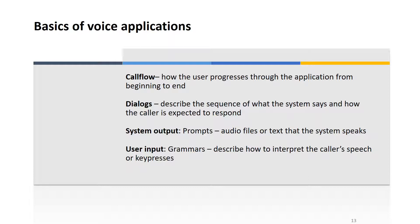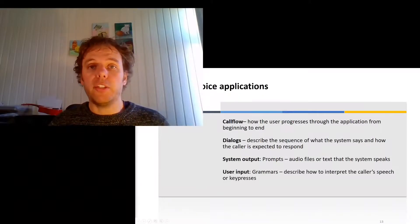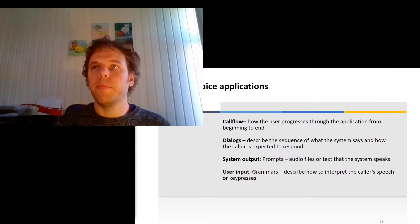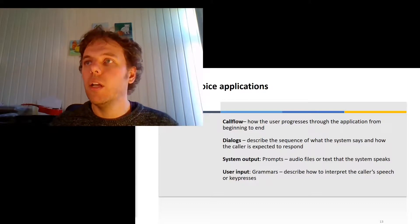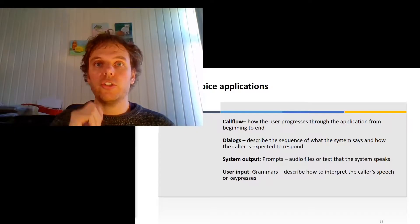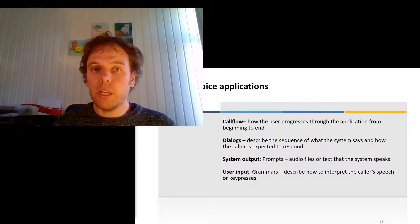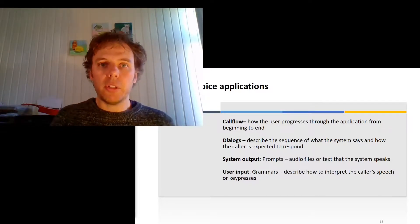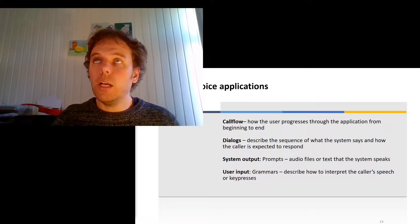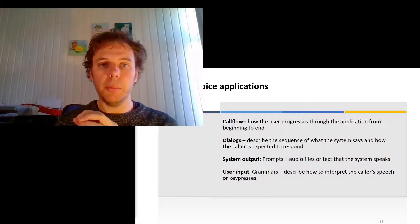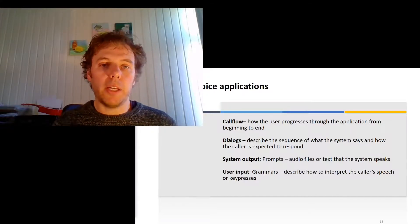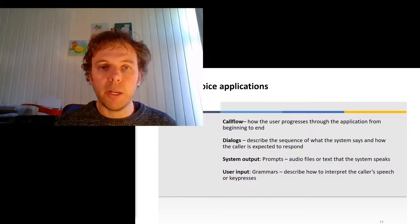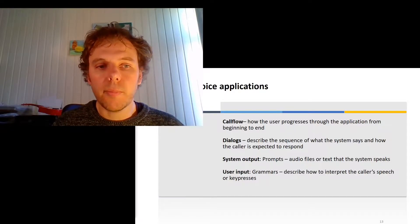Basic terms in voice applications: A call flow is the setup of a voice application — basically a tree where if you choose one you go here, if you choose two you go there. A dialogue is the back and forth between the user and the system. System outputs are prompts — basically something the system says to you. User input can be numbered choices, or defined by grammars, which allow specific types of input. For example, a list of cities matched through voice recognition, or a grammar for Dutch postal codes expecting four numbers then two letters.